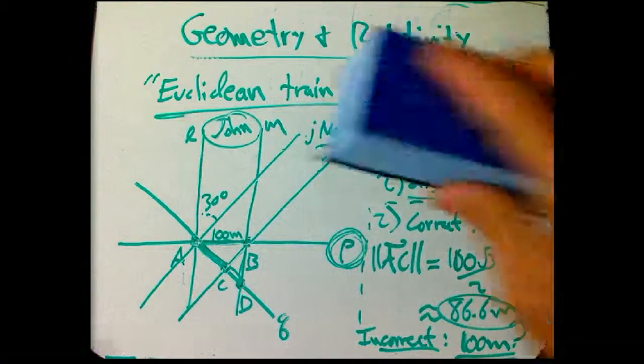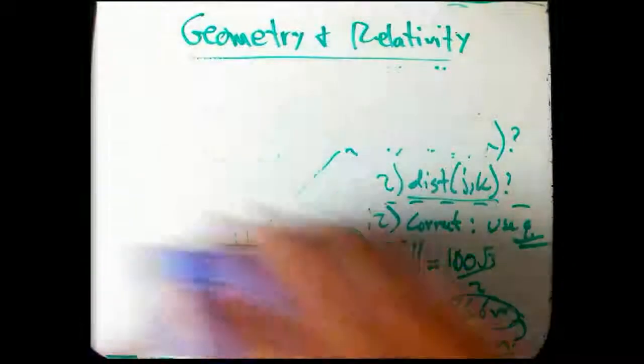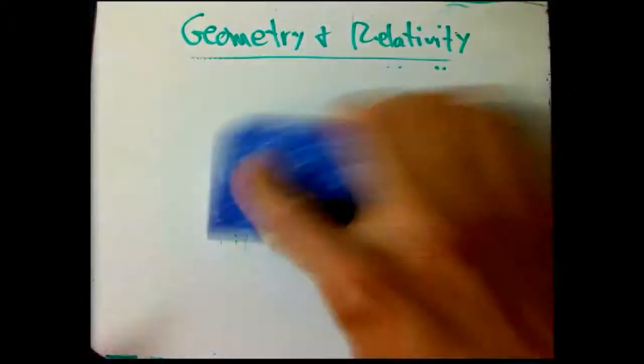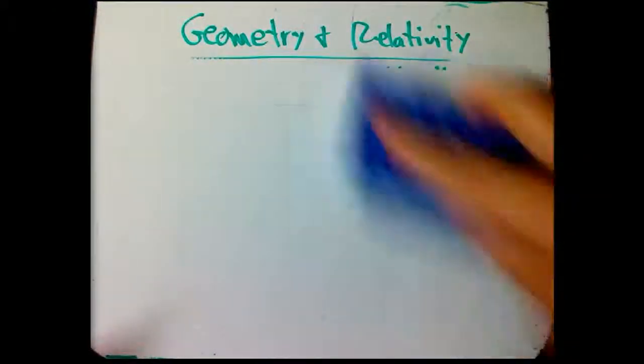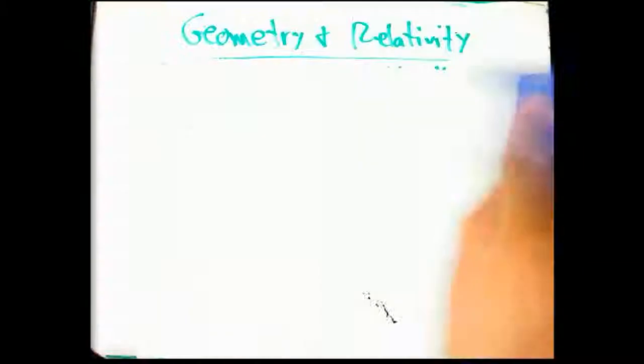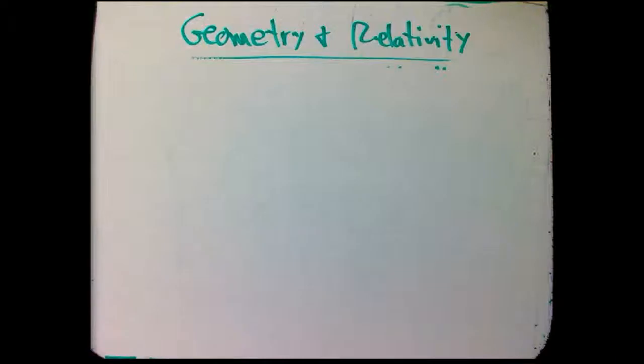So that's the Euclidean version of the train problem. And yeah, it's a little weird. We know how to measure the distance between two lines. We're not foolish enough to make those mistakes, but let's see how that work plays out in the relativistic situation.